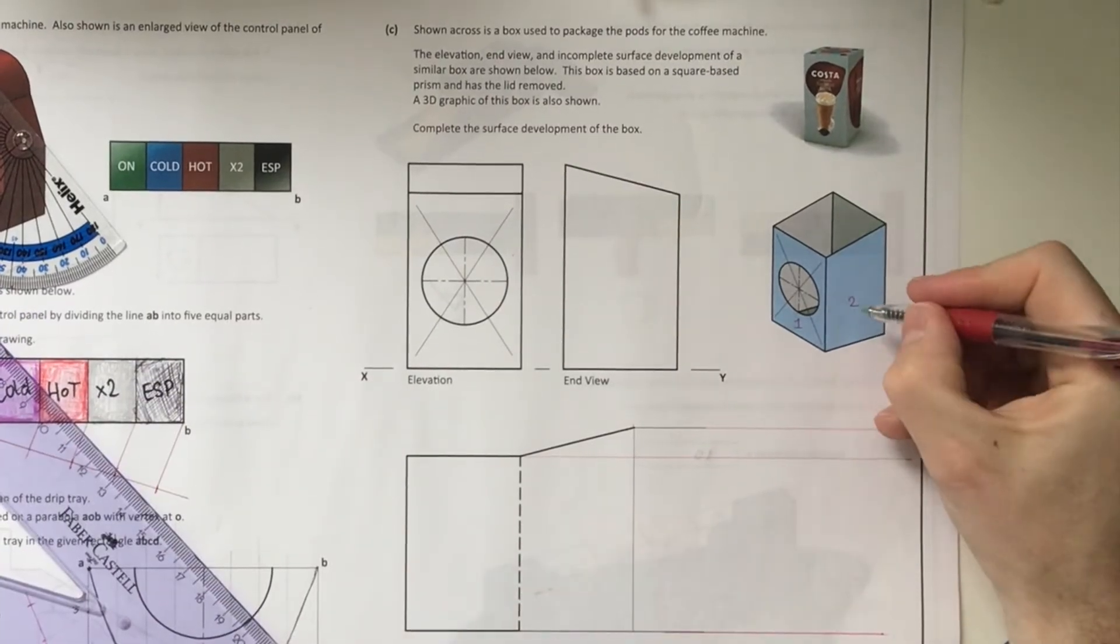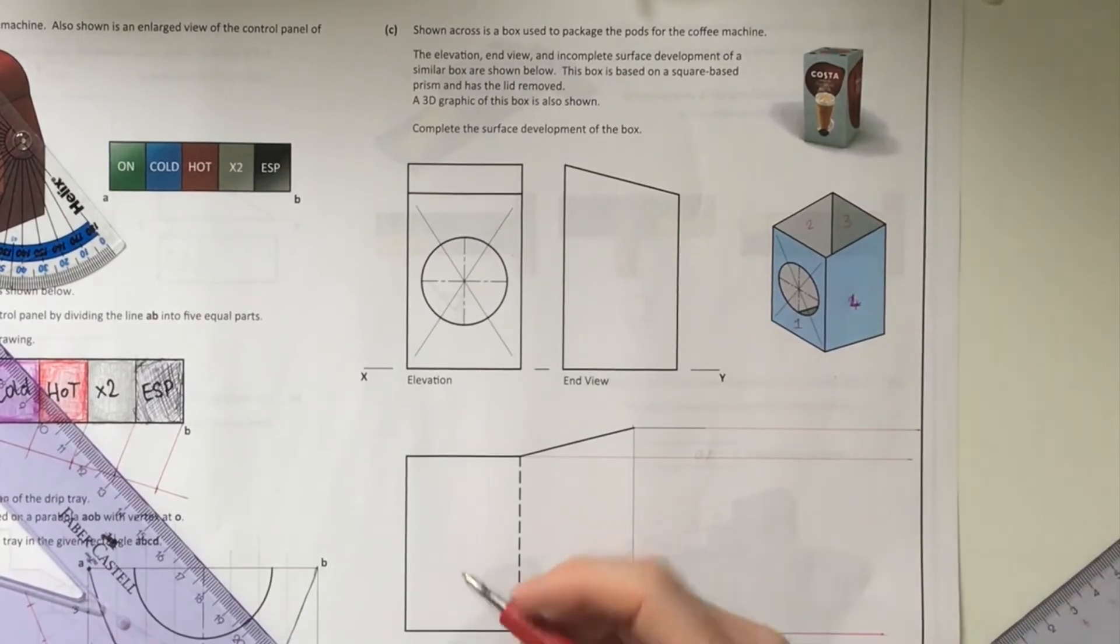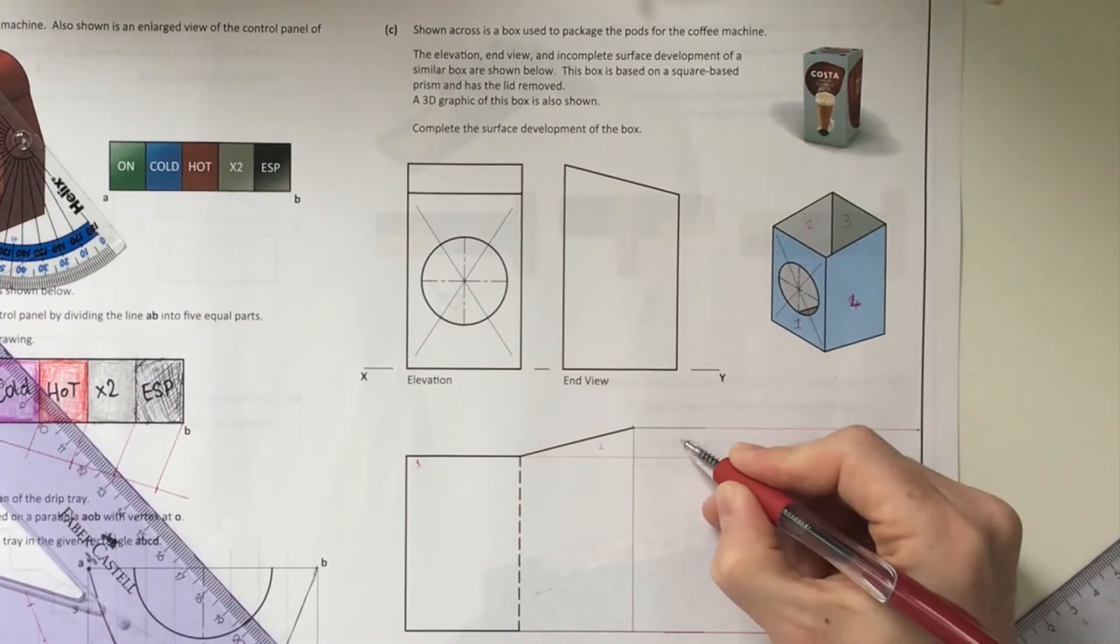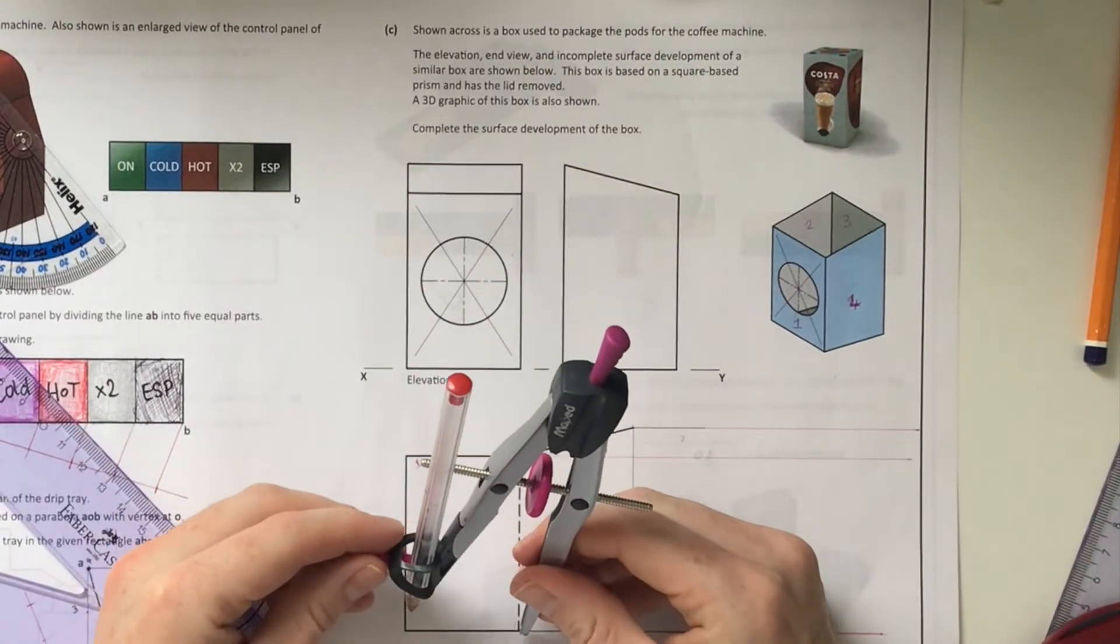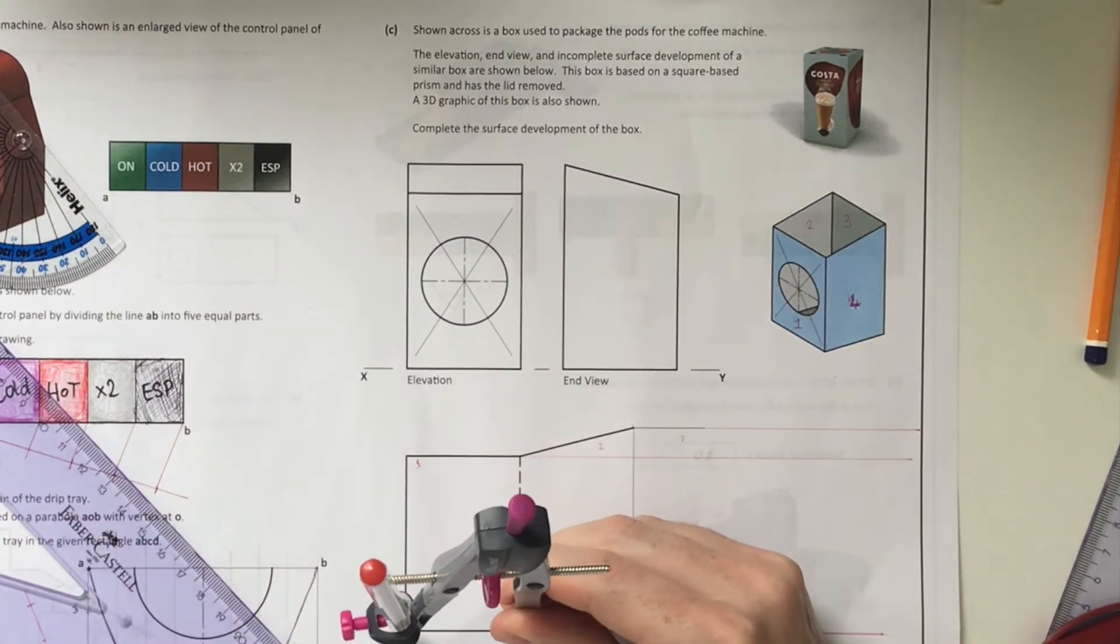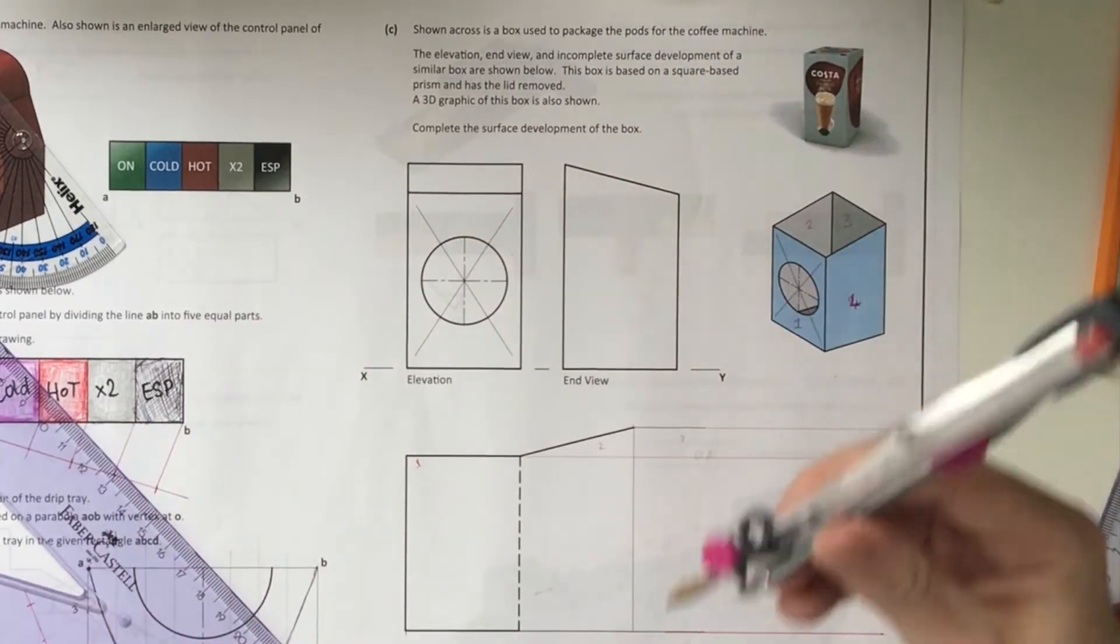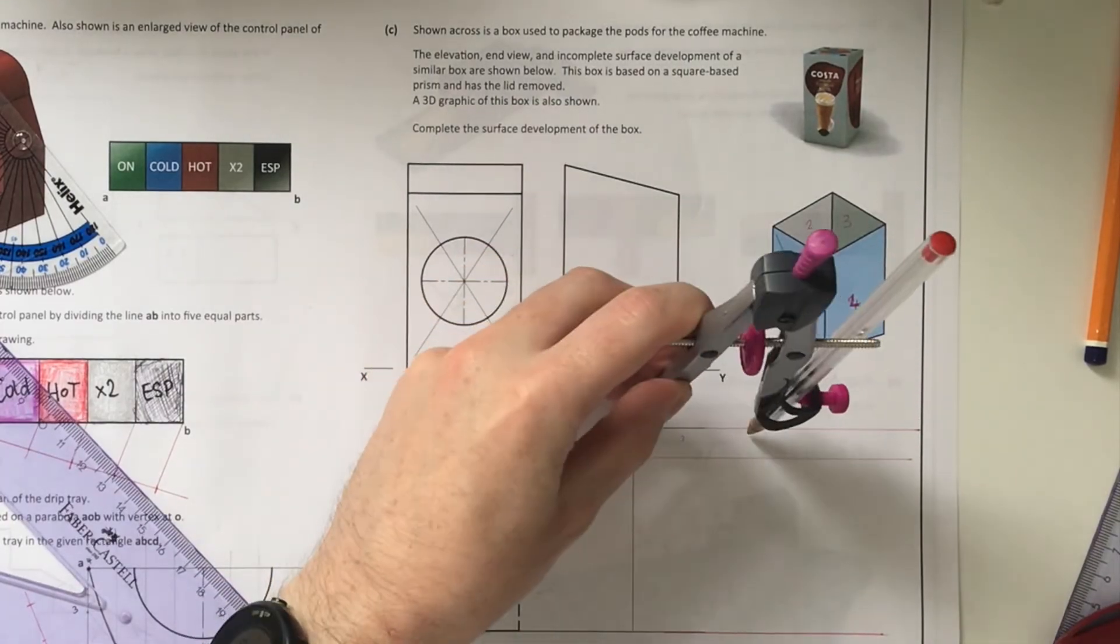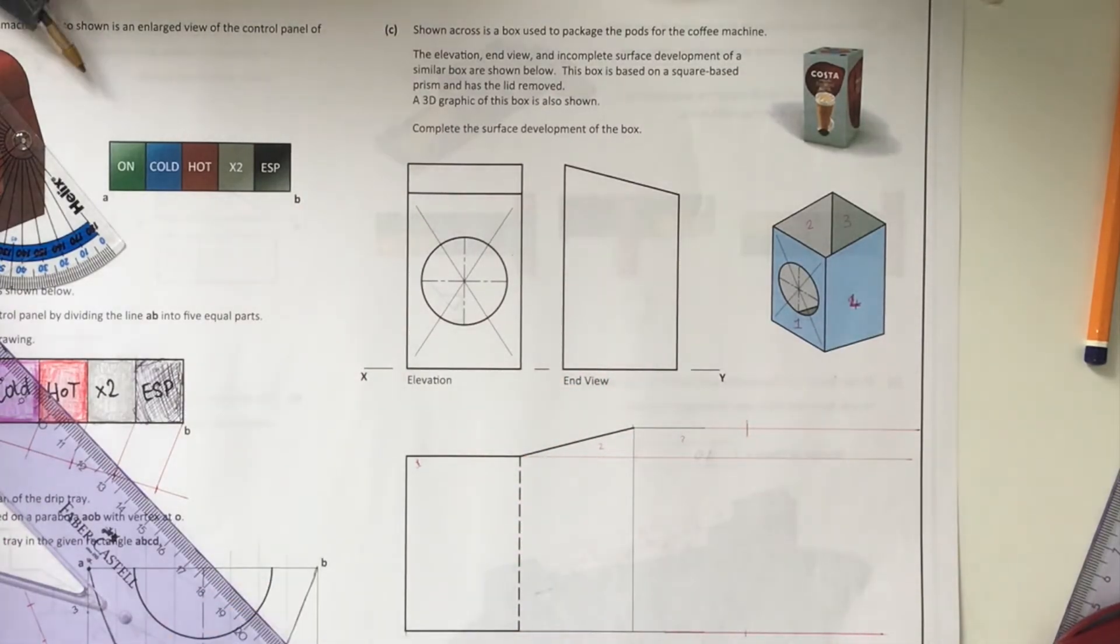Then I'm going to label up each one of the surfaces. Surface number one with the circle in it, surface number four, surface number two, and surface number three. This is surface number one, this is surface number two, surface number three will be here, and surface number four will be somewhere off to the right. I'm going to take the width of surface number one, because we know from our elevation above that the width of surface number one and the width of surface number three are the same.